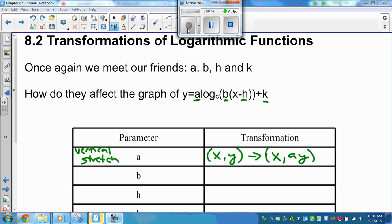B is always a horizontal stretch. When you stretch horizontally, you affect the X value, but you reflect it by 1 over B. Or sorry, you stretch it by 1 over B.